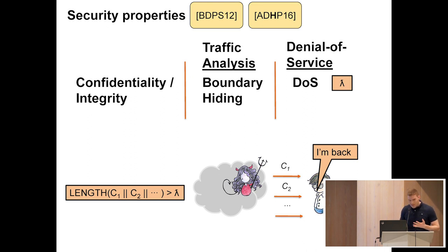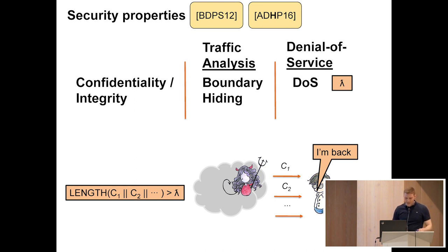Even though ChaCha is a very great scheme, it cannot utilize AES intrinsics, which is a drawback in popular contexts where SSH is used. So we see that none of the current SSH encryption schemes adequately provides the desired security properties. Two natural questions to ask are: can these security properties be realized simultaneously in SSH, and at what cost?